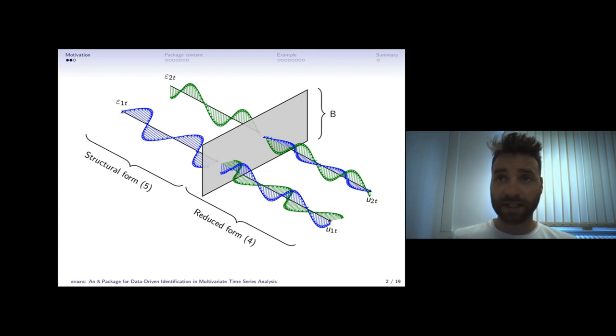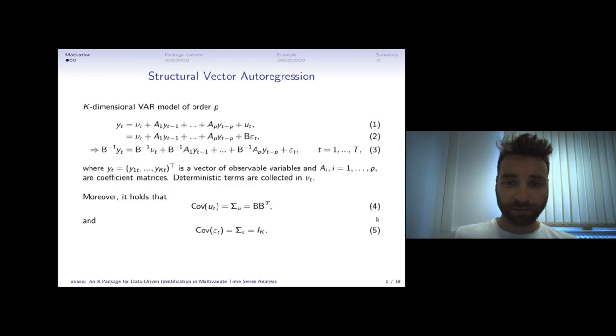We get them by estimating the matrix B, the key to the structural universe. But we get this matrix B by decomposing the covariance matrix of the reduced form error terms. What is difficult now is that this decomposition of the covariance matrix into BB transpose in equation 4 is not unique.